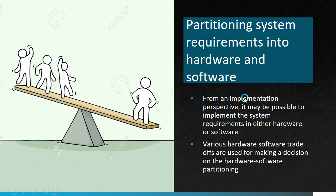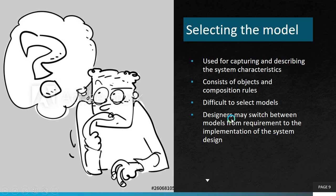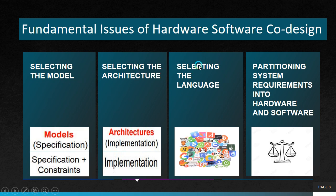The fourth issue is partitioning system requirements into hardware and software. We have a functional requirement, and we need to meet it by balancing the hardware and software parts accordingly. From an implementation perspective, it may be possible to implement system requirements in either hardware or software. Various hardware-software trade-offs are used for making a good decision on the hardware-software partitioning, which will be explained in later videos. These four points — selecting the model, selecting the architecture, selecting the language, and partitioning system requirements — are done in almost all projects.